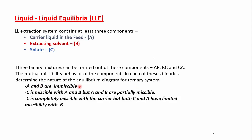Three types of ternary systems are common: (1) A and B are immiscible, while C is miscible with both A and B; (2) the solvent B and carrier A are partially miscible; or (3) the solute C is completely miscible with A, but both C and A have limited miscibility with B. These different situations affect the shape and nature of the ternary equilibrium diagram.